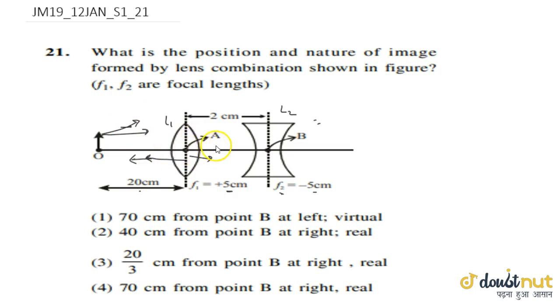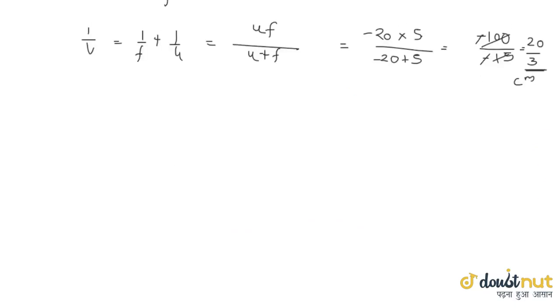From the pole, 20 by 3 centimeter, the first image is forming. And the separation between the two lenses is 2 centimeter. Let us draw the diagram again and understand it properly.